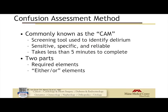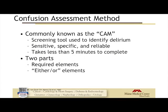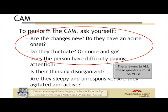The Confusion Assessment Method, or CAM, is a quick bedside screen to determine whether somebody has delirium. It's been around since the 1990s and is anywhere between 90 and 95% sensitive and specific. It was developed by looking at DSM-IV criteria for delirium and tested against psychiatrists' formal evaluations. It takes less than five minutes to complete and has a required element and an either/or section.